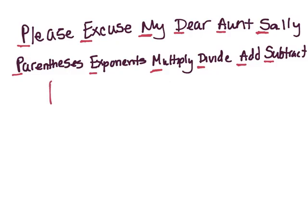We're going to think of it like this: parentheses on top, exponents second, multiply and divide are on the same level with an arrow going from left to right, and add and subtract are on the same level going left to right. That is because you don't always do multiplying before dividing — it's always in the order that they come. Same with adding and subtracting.